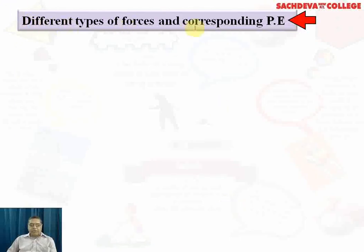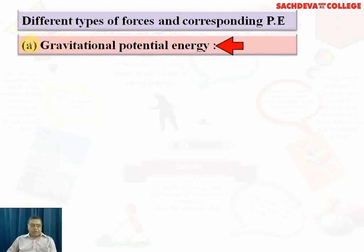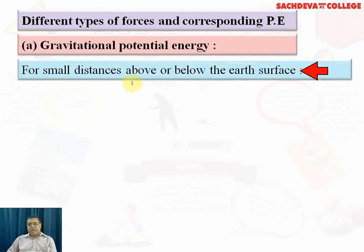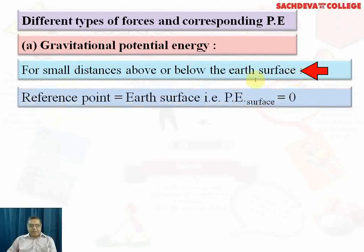Different types of forces and their corresponding potential energies: Number one is gravitational potential energy, given as −GMm/r, where G is the gravitational constant, M is the larger mass, and m is the smaller mass revolving around it. For small distances above or below the Earth's surface, the reference point is the Earth's surface, and potential energy at the surface is zero.